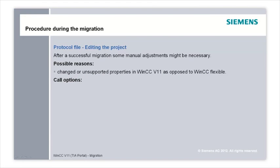After a successful migration, some manual adjustments might become necessary. Possible reasons are, for example, non-supported or changed object properties which are not realized in WinCC version 11 or realized differently than in WinCC flexible, stricter criteria for checking tag addresses or the length of object names in WinCC version 11. Object names in WinCC version 11 need to be unique throughout the project — a picture name, even if located in a subfolder, can only be used once in the project.